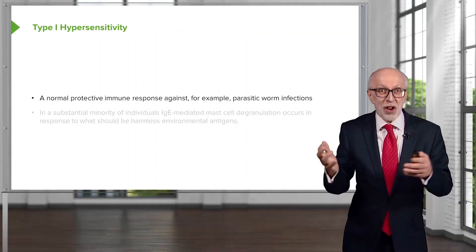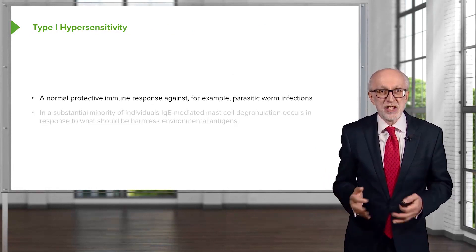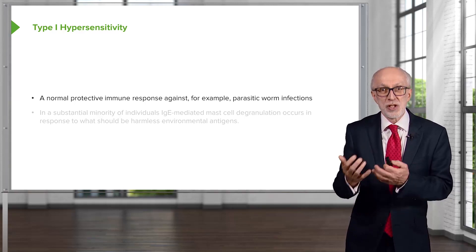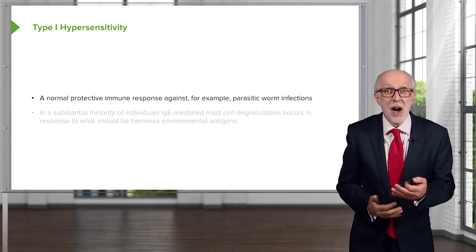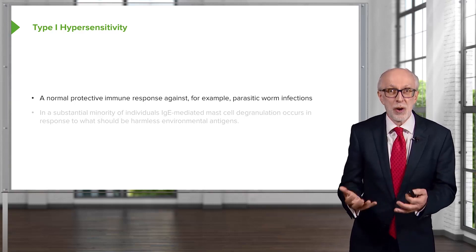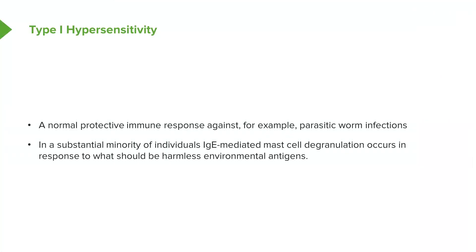All of these responses are normal responses. A type 1 hypersensitivity reaction is based upon a normal protective immune response — for example, against a parasitic worm infection in the gut, where you'd be very grateful for this response because it would help expel the worms. However, in a substantial minority of individuals, IgE-mediated mast cell degranulation occurs in response to a harmless environmental antigen like grass pollen, leading to pathology. It's a very common affliction.